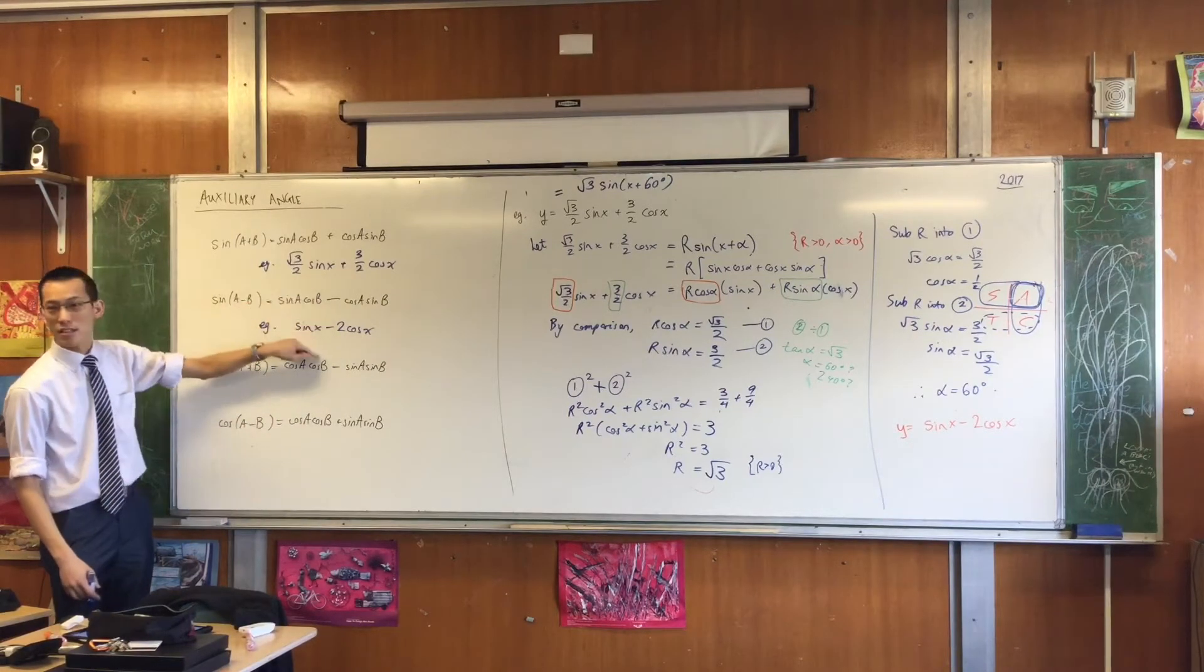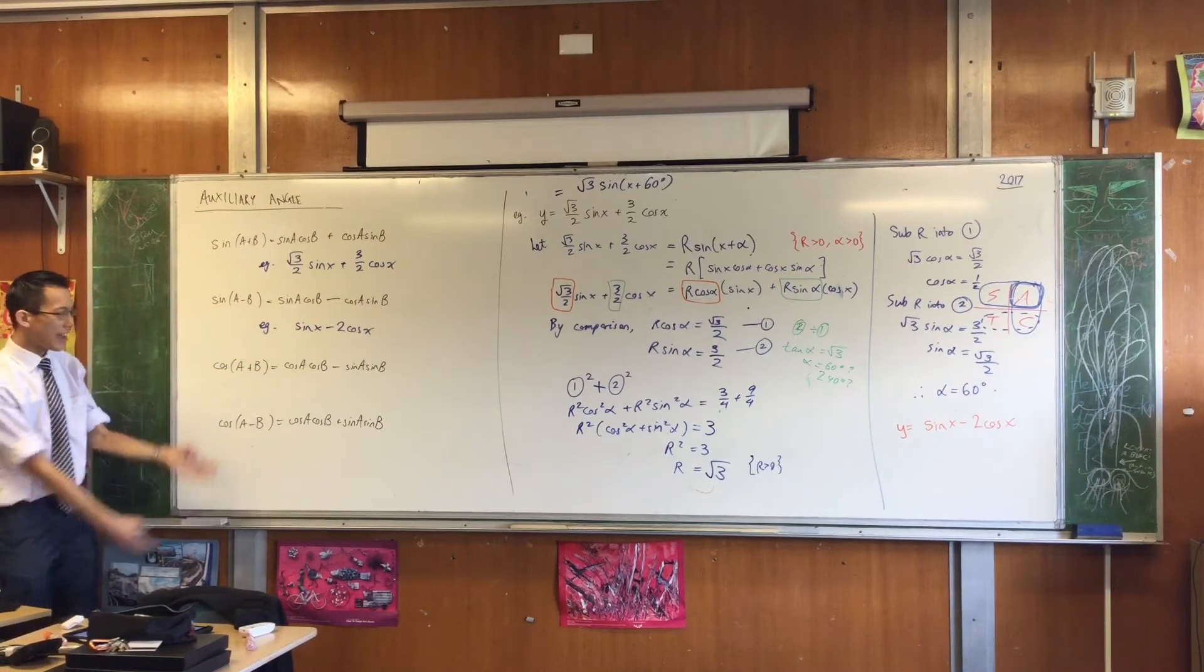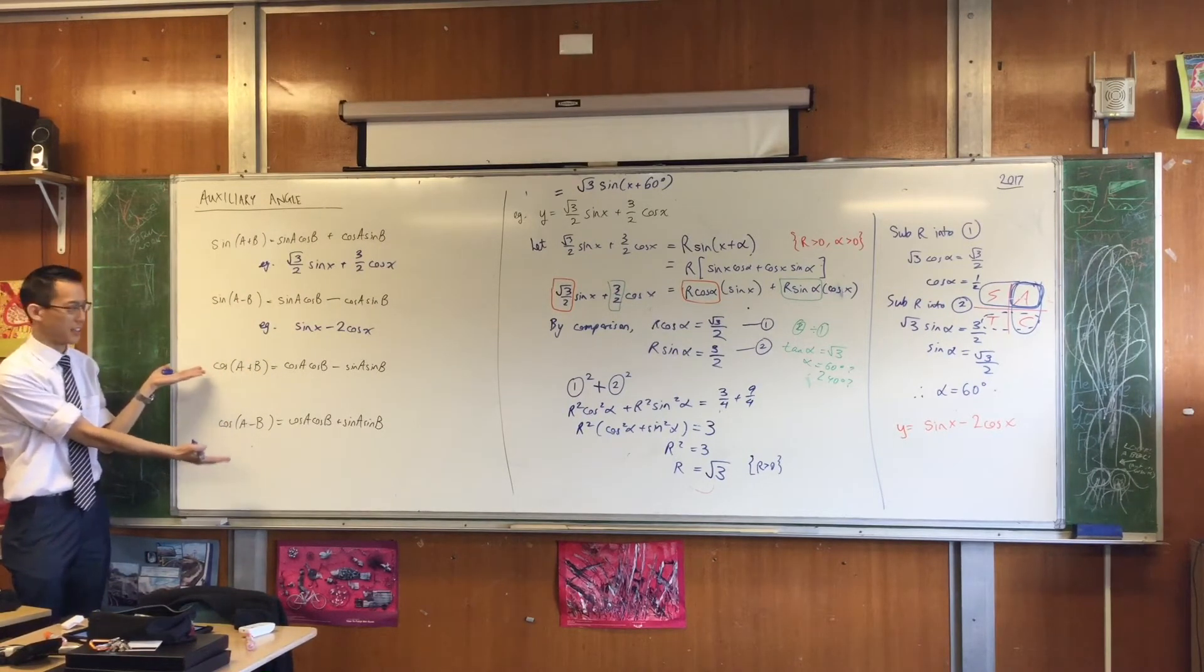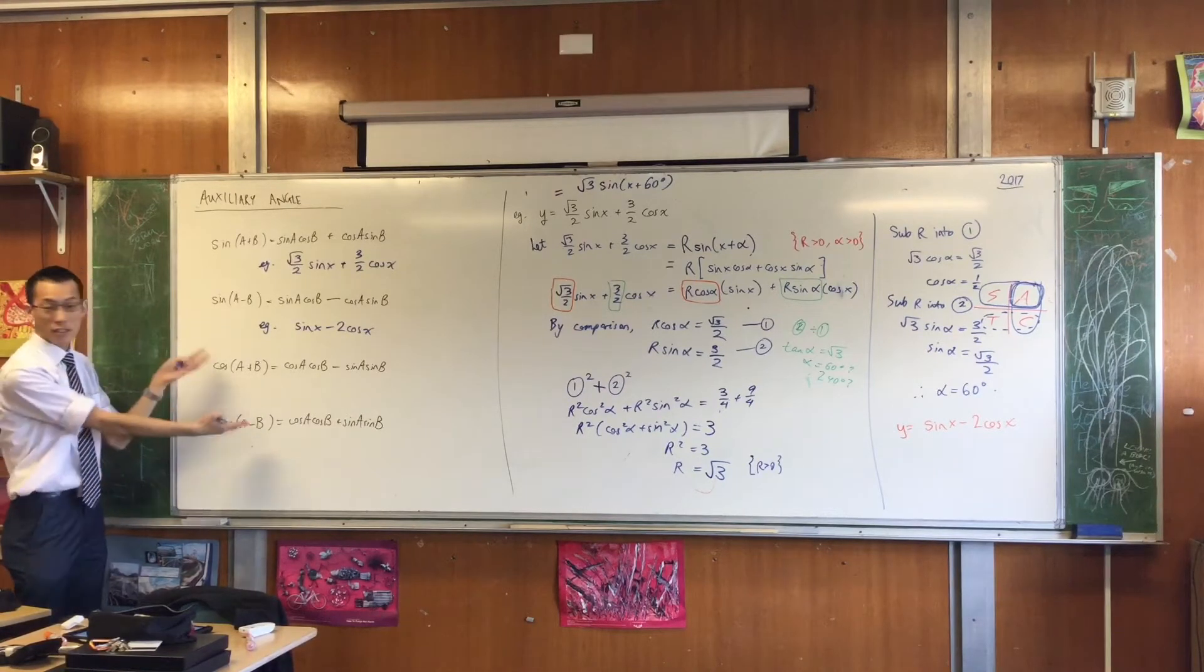If sine x is the first function, you use this guy, or this pair of guys, rather. If cos x, on the other hand, is what comes first, okay? And I know I can rewrite this if I wanted to, but if cos x was what came first, then I'm going to use one of these.